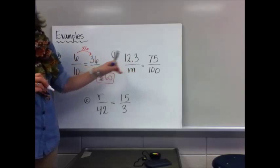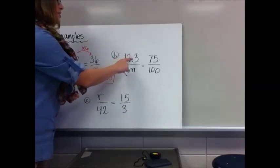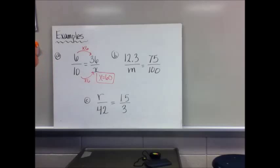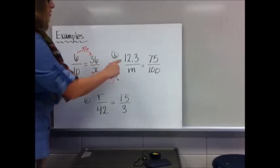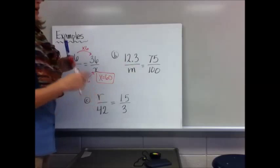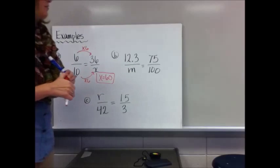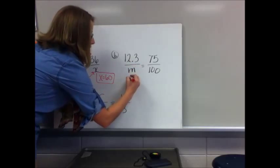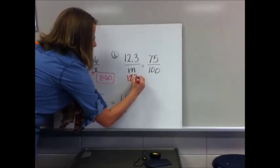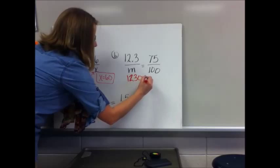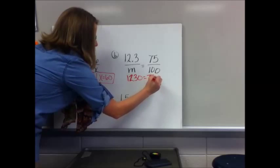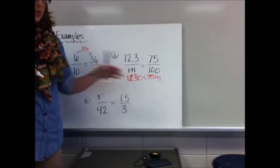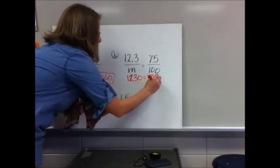For example B, I can't easily find what to multiply 12.3 by to get 75, so we're going to cross-multiply: 12.3 times 100. Since 100 has two zeros, the decimal moves two places to give 1,230, which equals 75M. We'll undo what's happening to the variable by dividing both sides by 75.